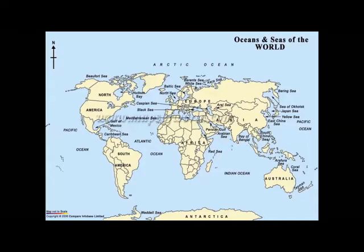So here, this is plotted like this. This is Atlantic Ocean, this is Indian Ocean, and this is Arctic Ocean. And here is the Southern Ocean — also called Antarctic Ocean.